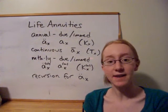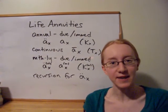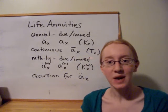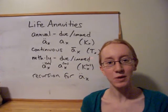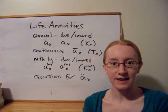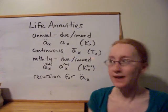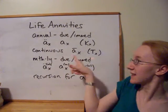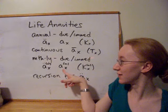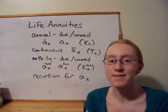And for all of these five cases, we can evaluate the present value in three different ways. One of the ways would be to look at it as a corresponding function of the associated life insurance contract. So here would be capital A x, here would be capital A bar x, and here would be capital A upper m sub x.